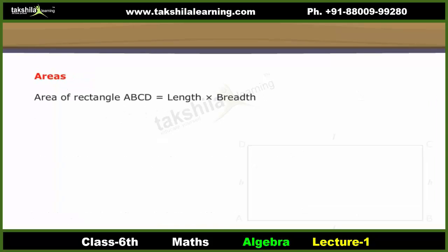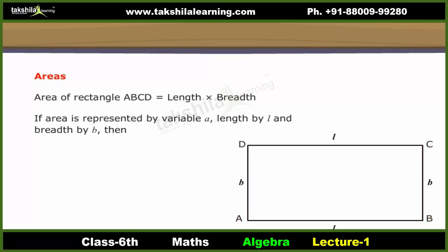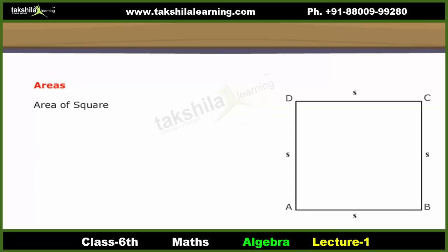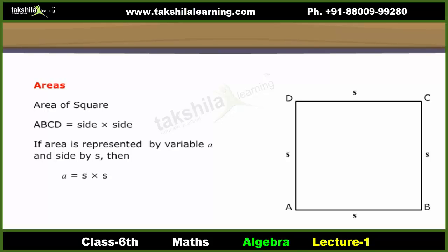Areas: Area of rectangle ABCD equals length into breadth. If area is represented by variable A, length by L, and breadth by B, then A equals L into B. Variable A varies with variations in variables L and B. Area of square ABCD equals side into side. If area is represented by variable A and side by S, then A equals S into S. Variable A varies with variations in variable S.